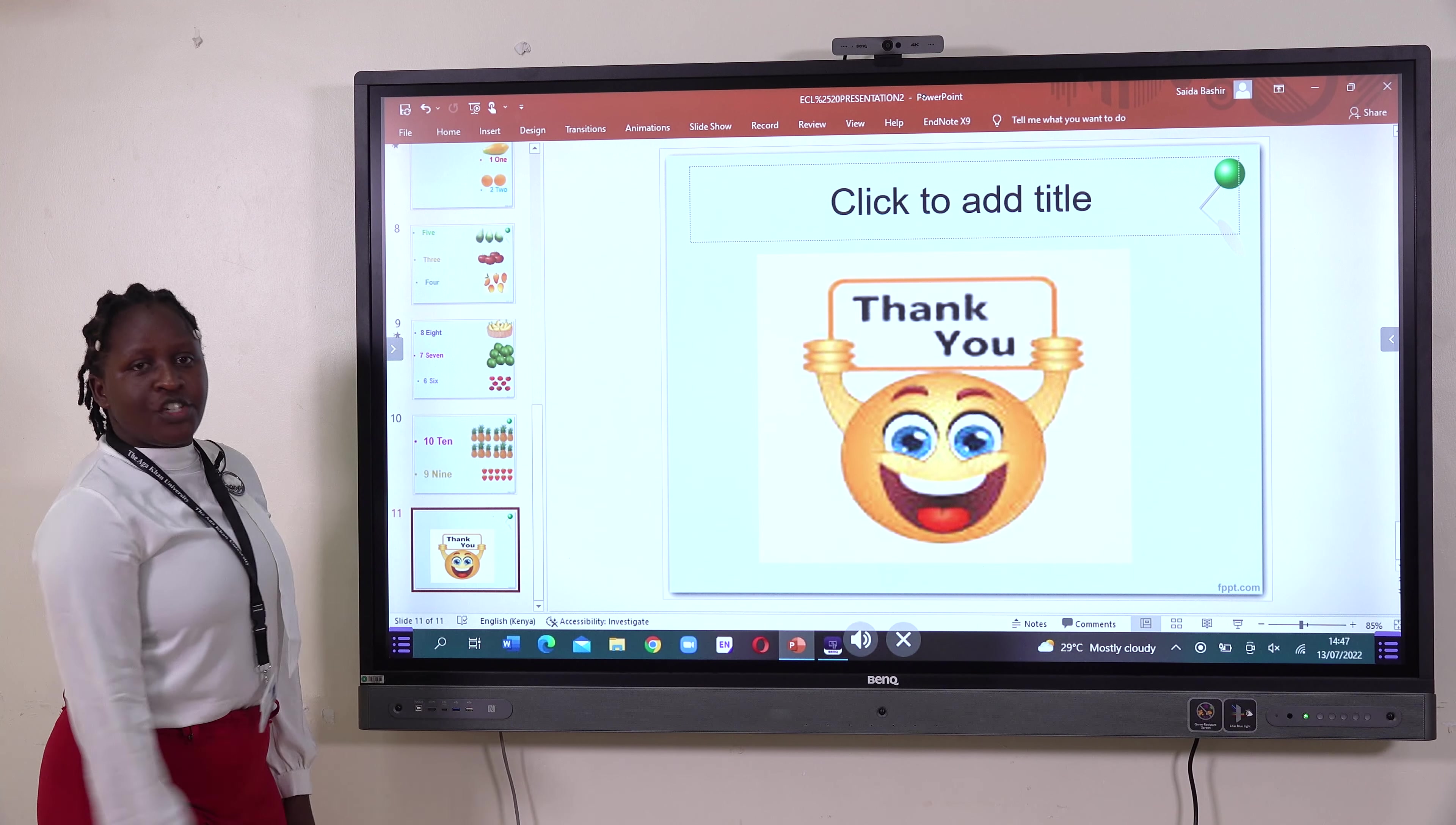And then this is now number six. This is number six and this is how number six is written. Number seven. This is figure seven and this is how number seven is written. For number eight, this is how number eight is written. It is the figure number eight and this is how eight is written.